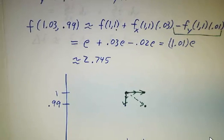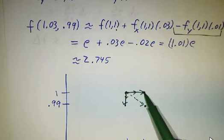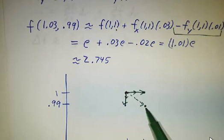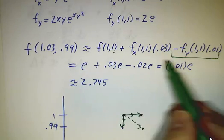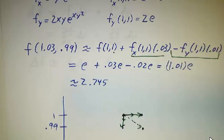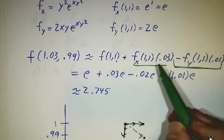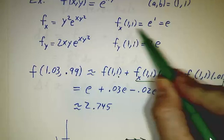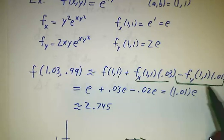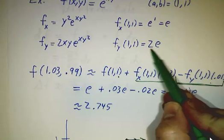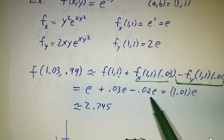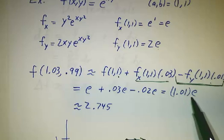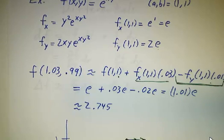The effect of going across .03 and down .01 is roughly the effect of going across .03 plus the effect of going down .01. And the effect of going across by .03 is the derivative with respect to x times .03, and the effect of going down by .01 is the derivative with respect to y times .01. And you add them all together, and you get 1.01e, and that's about 2.745.